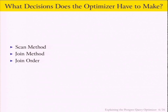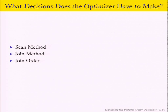So what does the optimizer do? It does three primary things. Its job is to look at your query and figure out how to get you the answer as quickly as possible. It has to be adaptive — certain queries can be executed one way really fast, another way really slow. It's got to make three decisions for every query: the first is called a scan method, the second is what we call a join method, and the third is a join order.